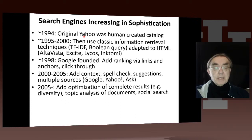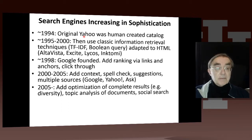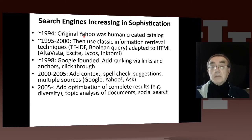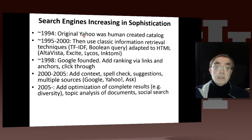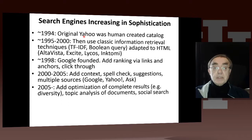So when I say the first generation of searches, AltaVista was very important. Inktomi from Brewer at UC Berkeley was one as well. These used information retrieval — the TF-IDF, which will be mentioned later — and Boolean queries adapted to HTML.